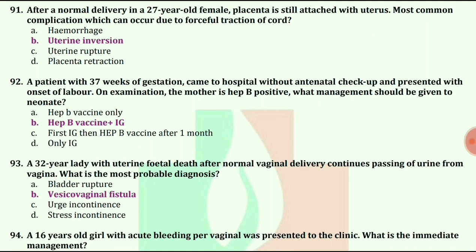A patient with 37 weeks of gestation came to hospital without antenatal checkup and presented with onset of labor. On examination, the mother is hepatitis B positive. What management should be given to the neonate? The answer is hepatitis B vaccine plus Ig.